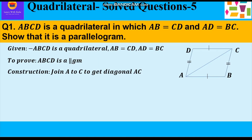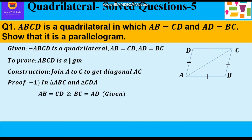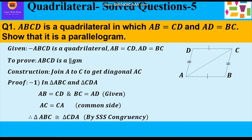First let us do the construction: join A to C to get the diagonal AC. Now for the proof, we take the two triangles naming them as triangle ABC and triangle CDA, so that we can say angle A equals angle C and angle B equals angle D accordingly. AB equals CD and BC equals AD — both opposite sides are equal, as given — and AC equals CA, which is the common side. So we can say triangle ABC is congruent to triangle CDA by SSS congruency.